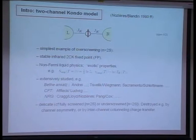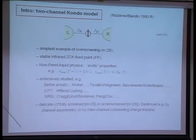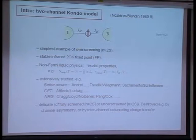But the effect is delicate — very delicate indeed. It's completely destroyed by channel asymmetry: if JK left is not equal to JK right, the fixed point is destroyed and you have a Fermi liquid state instead. Or it's destroyed by inter-channel co-tunnelling charge transfer in the language of quantum dots, to which I'll come back later.